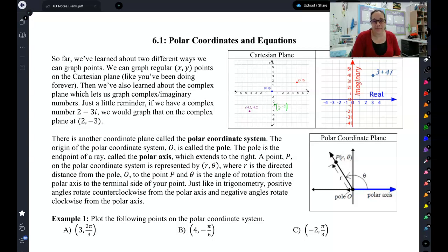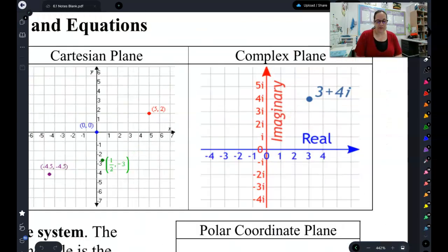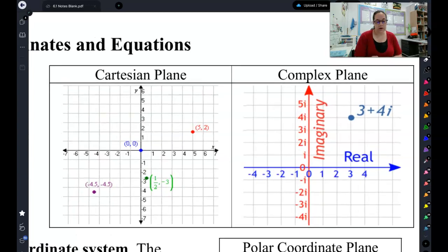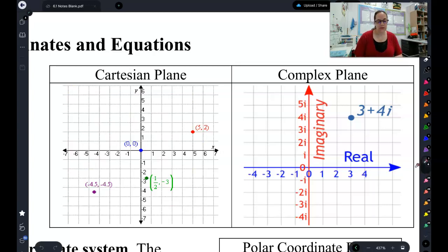Welcome to Lesson 6.1. Let's start with a little bit of review. So far in your math history, you have learned how to plot two different kinds of points. You have talked about the Cartesian plane, which is the name of the plane where you just plot x, y.